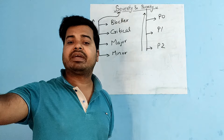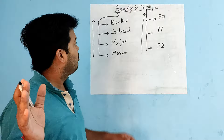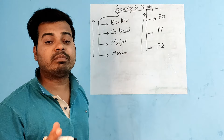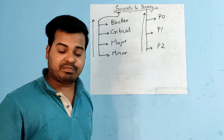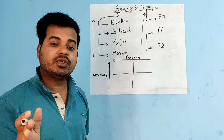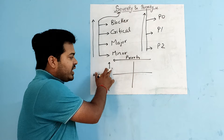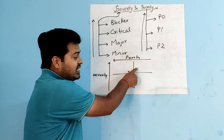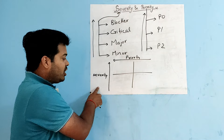Always remember it is the QA who decides what the priority and severity of any bug will be. In some companies, the product manager or developer can change the priority of a bug raised by testers. In interviews, you can expect questions like: give an example of a high priority and high severity bug, or low severity and high priority bug, or high severity and low priority bug, or low severity and low priority bug.